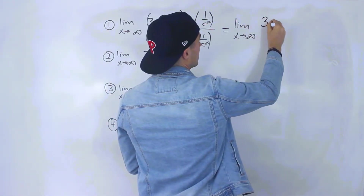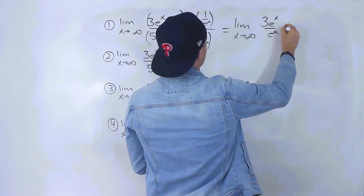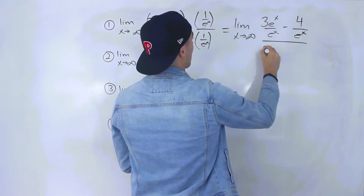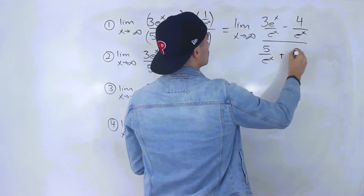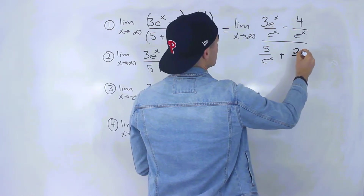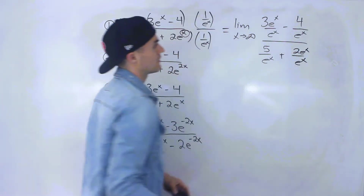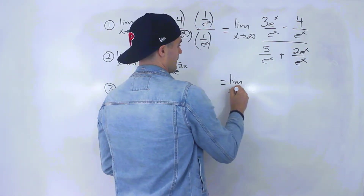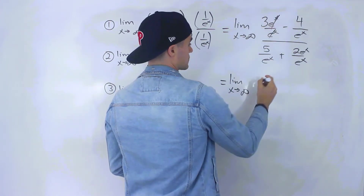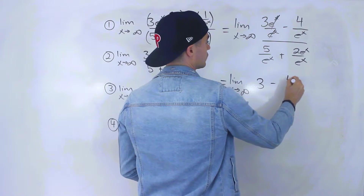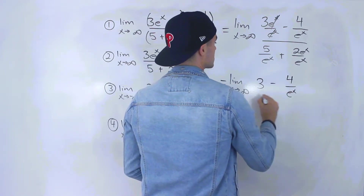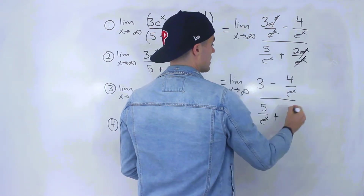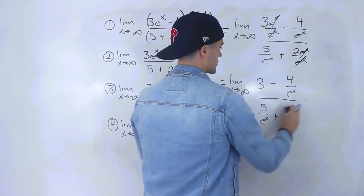So everything is going to get divided by e^x. We'll have 3e^x over e^x minus 4 over e^x, all over 5 over e^x plus 2e^x over e^x. Simplifying: notice how the e^x's cancel out, so we'll be left with 3 minus 4 over e^x, all over 5 over e^x plus 2.